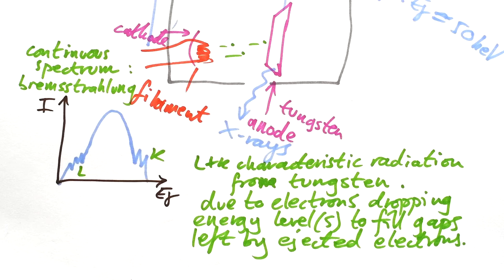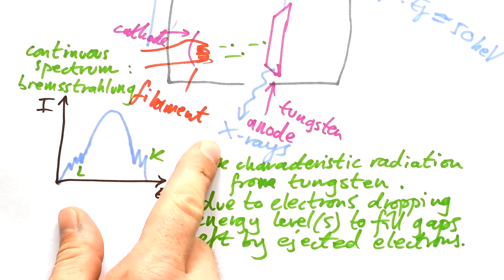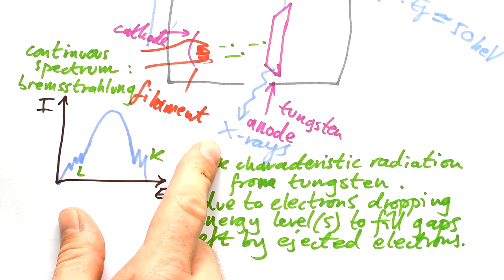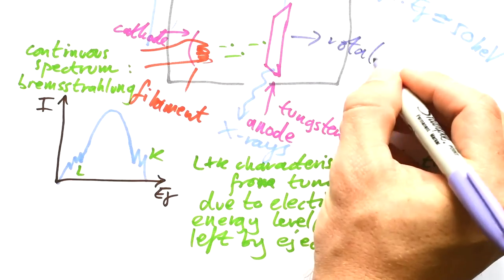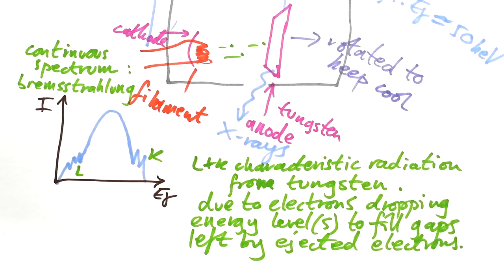Problem is, it's not very efficient. Only about 1% of the energy of the electrons is actually converted into X-rays. The other 99% is converted into heat. So what we do is we rotate it to keep it cool.